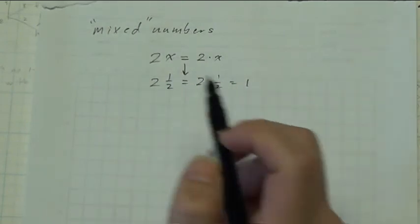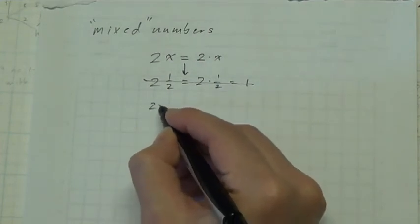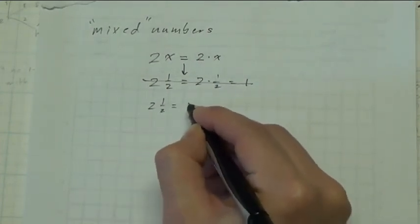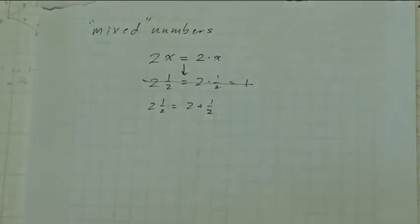That's not how these mixed numbers are used. In so-called mixed numbers, juxtaposition is implying addition. Oh, my gosh. Terrible. Mixed numbers need to die. Alright. Thank you for listening. Have a good evening.